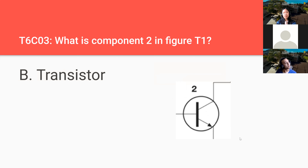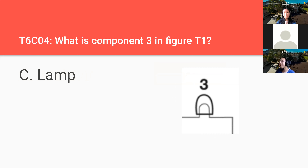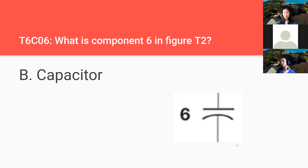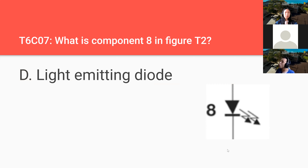What is component two in figure T1? A transistor. What is component three in figure T1? That's a lamp — kind of looks like one if you look hard enough. What is component four in figure T1? That is a battery. What is component six in figure T2? A capacitor. What is component eight in figure T2? That is a light emitting diode — those little arrows represent the light coming off of it.